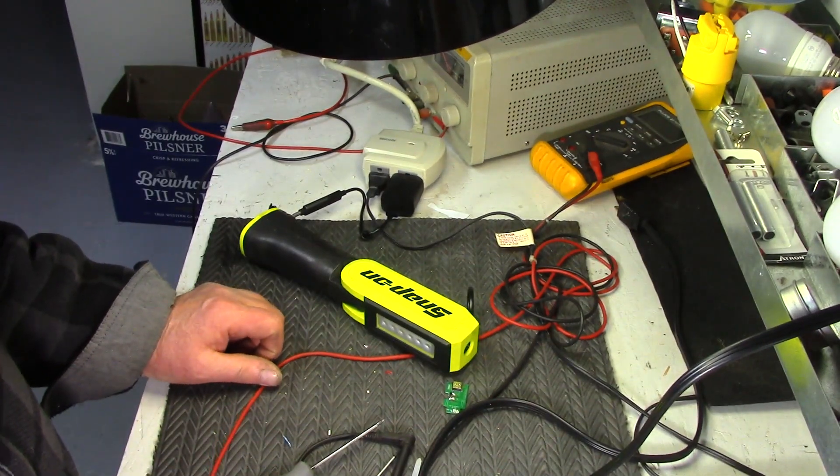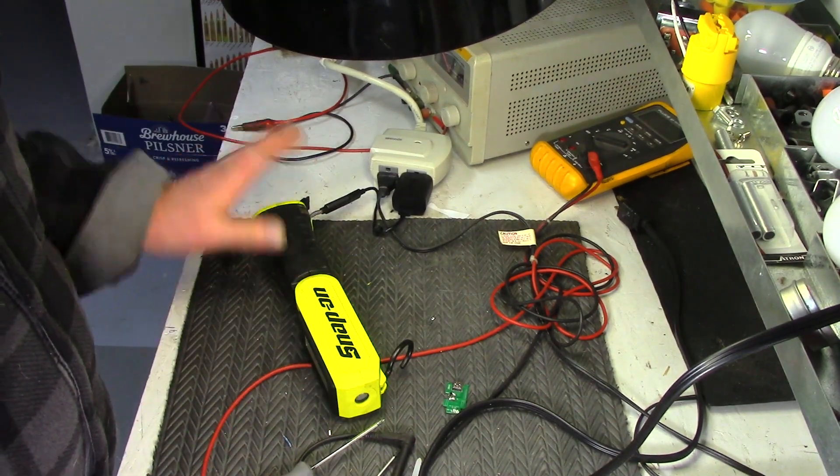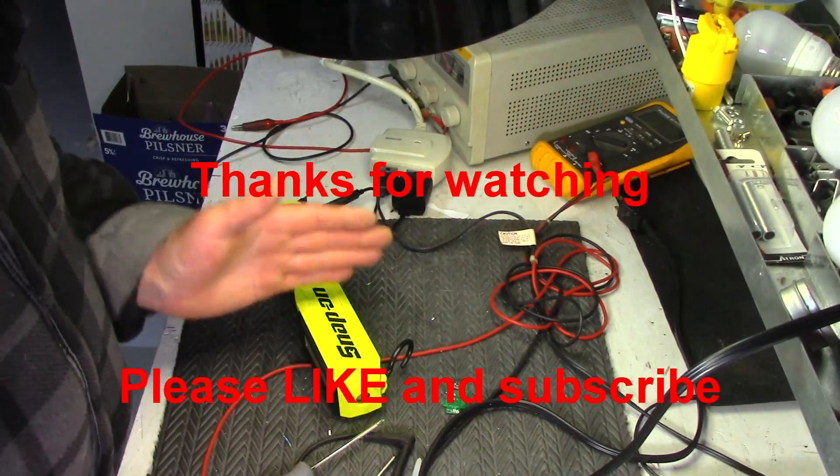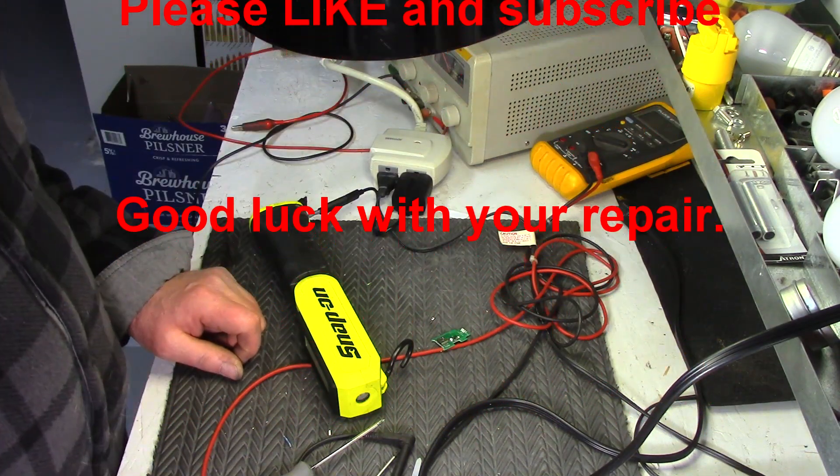It's amazing how that piece when it fell broke, but it did. But there you go, one Snap-on light saved from the dump. Hope you learned a little something about electronics. Go to the basics, get rid of everything, and start from the very end and work your way. And that's how I found out that this was the problem. Good luck with your repair.